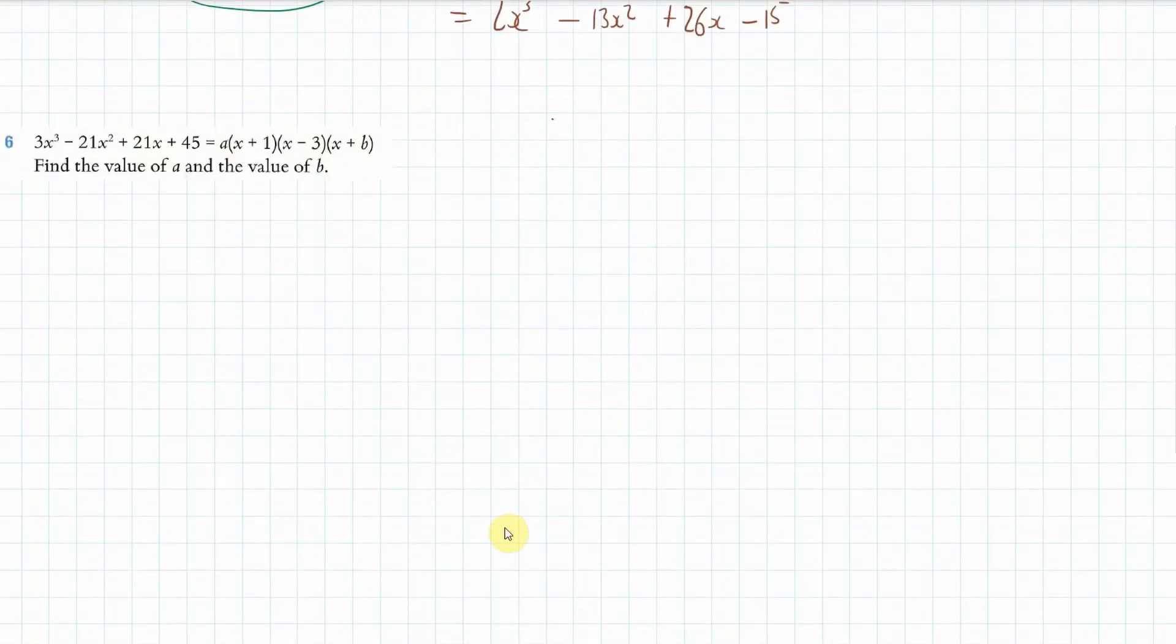Now the next one, this time we are told that 3x³ - 21x² + 21x + 45 is equal to this factorized version here, and we've got to find the values of a and b. So what I'm going to do first is I'm going to expand these two brackets here.